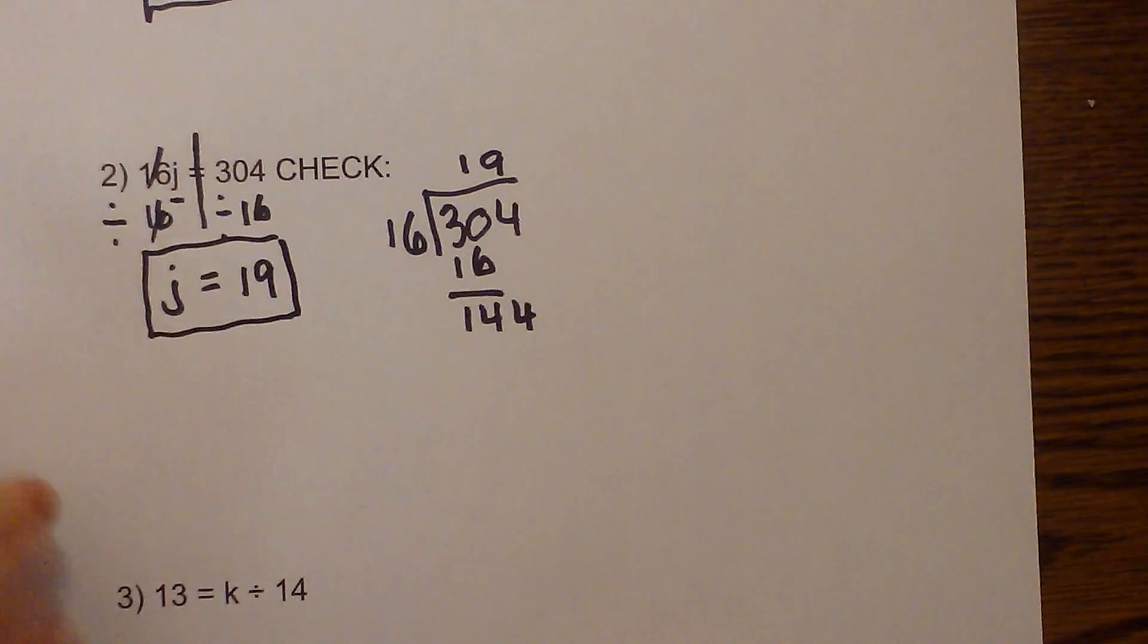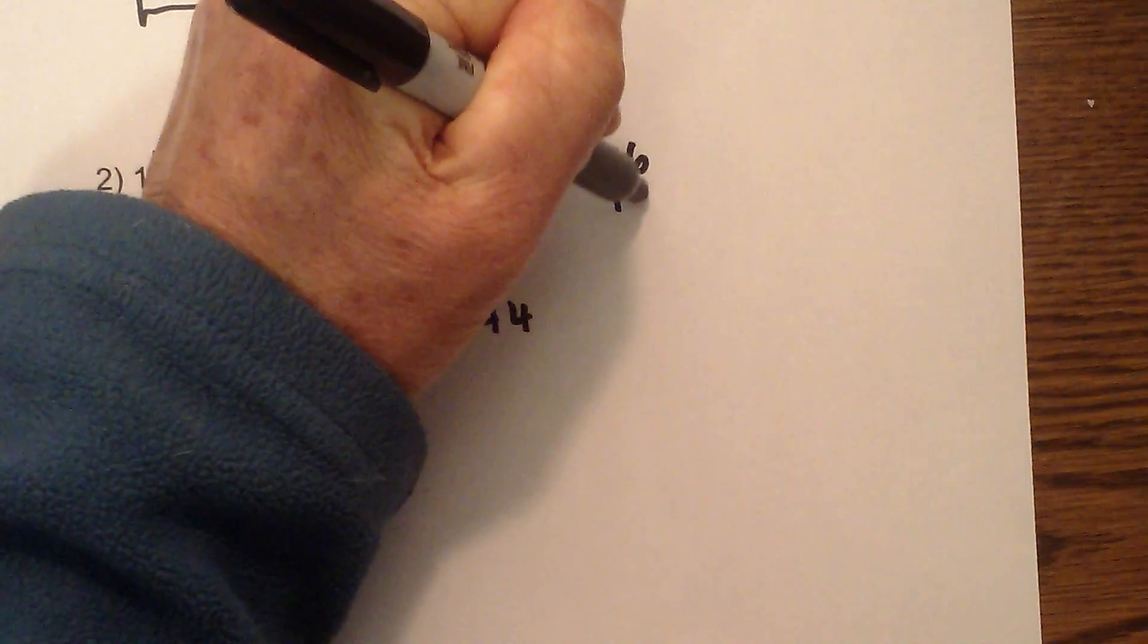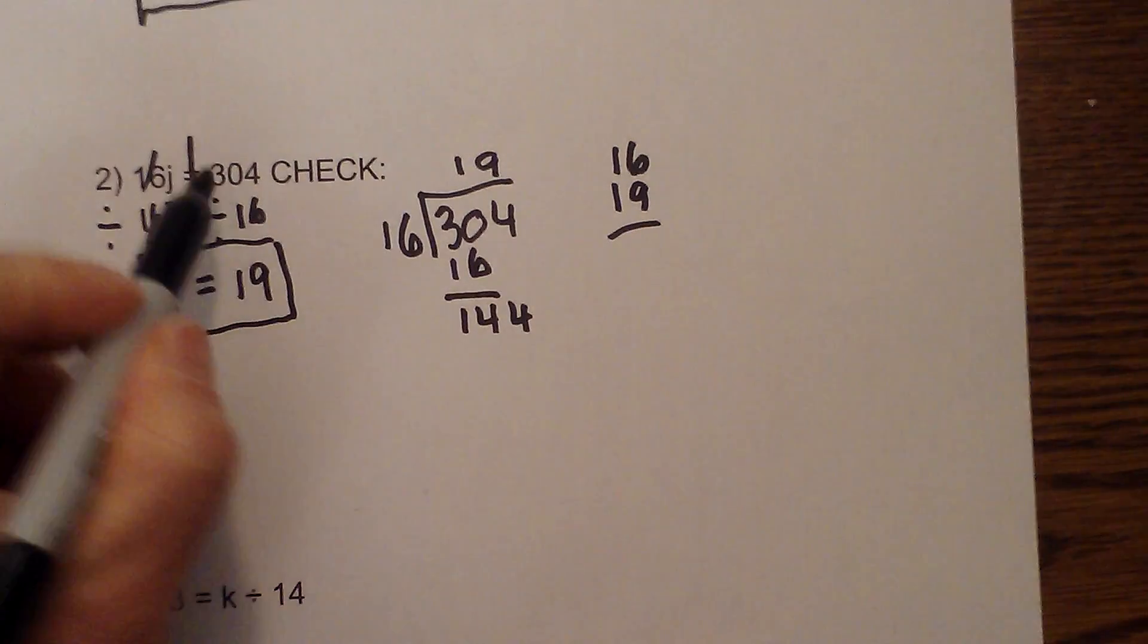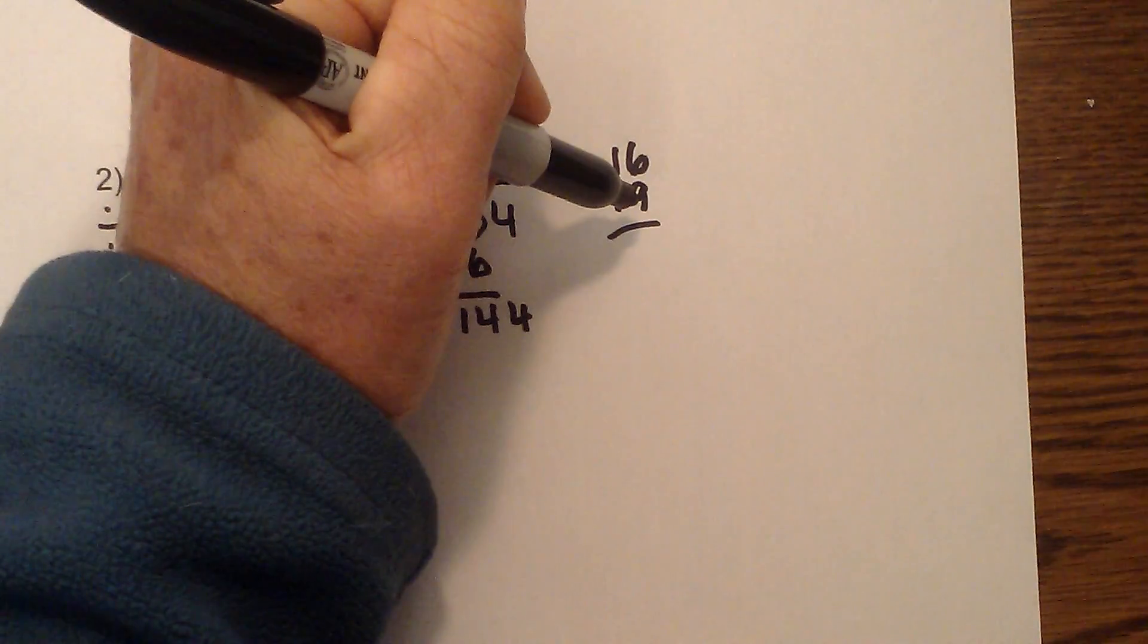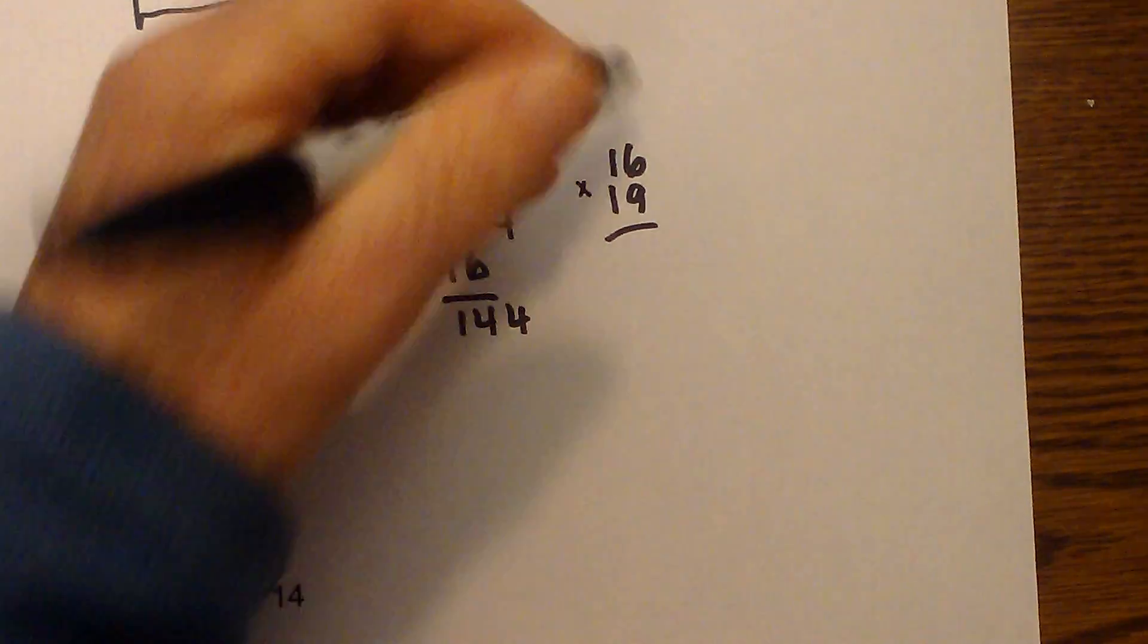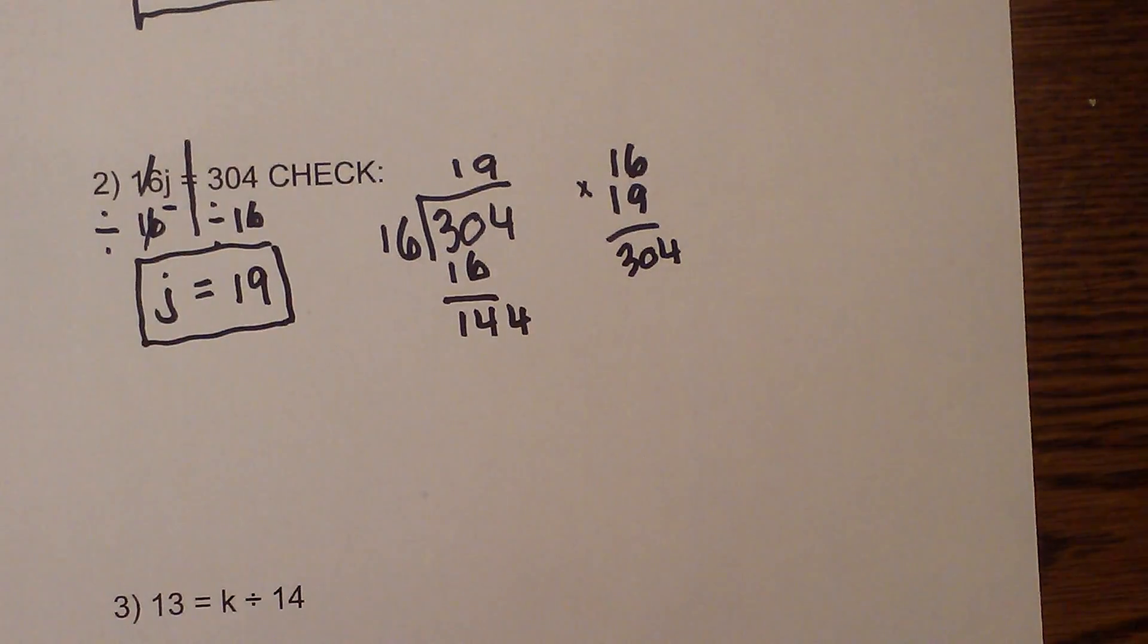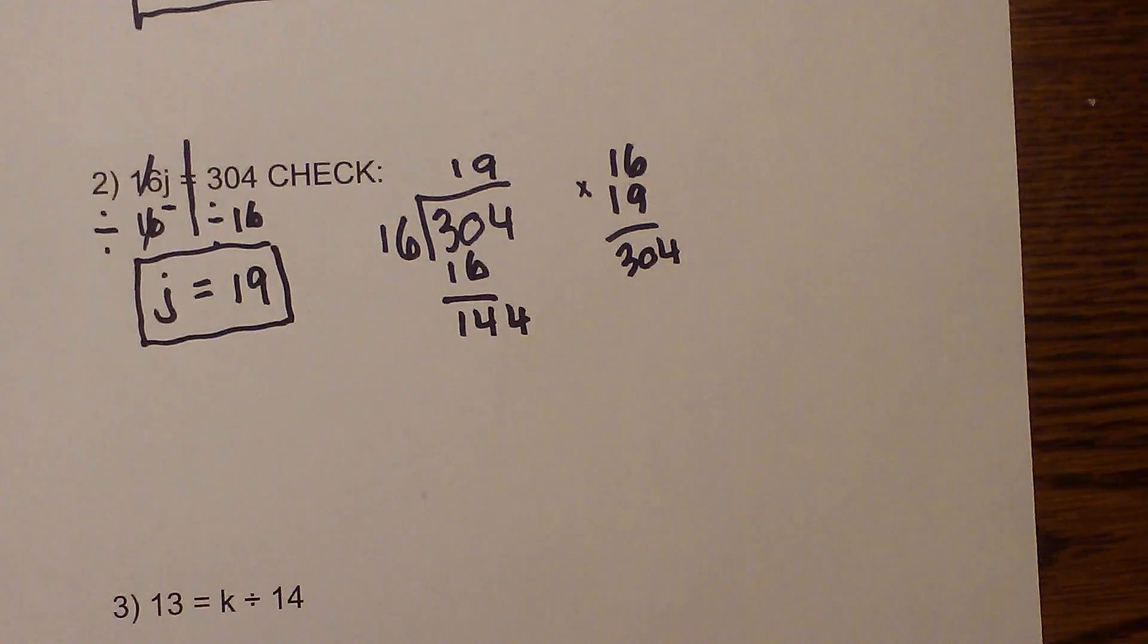Okay again I can check my work. If I go 16 times 19 that should equal 304, and if I get my trusty calculator out and multiply 16 times 19 it is indeed 304. Okay so we checked our work on that one.